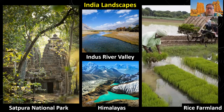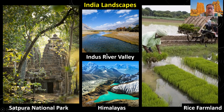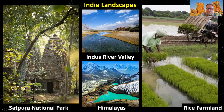India's landscapes include very dense tropical forests — this is Saptora National Park. They have the Indus River Valley, one of the oldest civilizations in the history of Earth. Early human civilizations included the Tigris-Euphrates Mesopotamian River Valley, the Nile River Valley, and the Indus River Valley. They share the border of the Himalaya Mountains with Nepal and China. A lot of their farming and agriculture is rice, grown in rice paddies like we see in Southeast Asia.